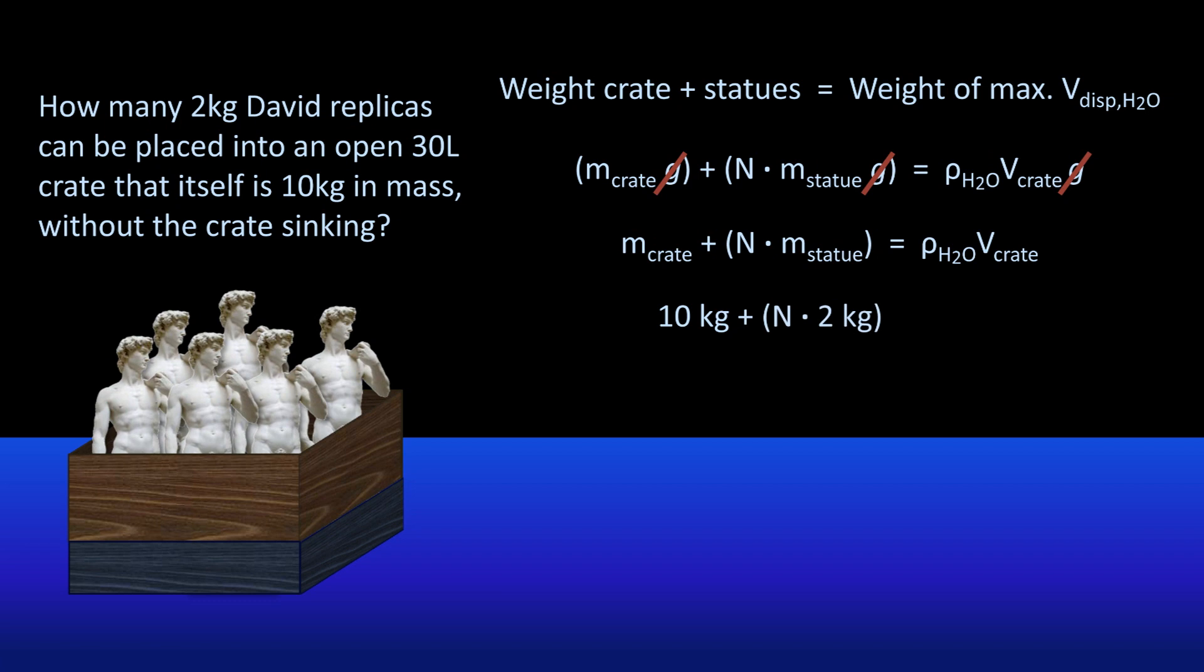While we could calculate the product of the density of water and the volume in terms of cubic meters in order to get the water's mass, we could also use an important relationship from the last lesson. The mass of 1 liter of water is 1 kilogram. Therefore, the mass of 30 liters of water is 30 kilograms.